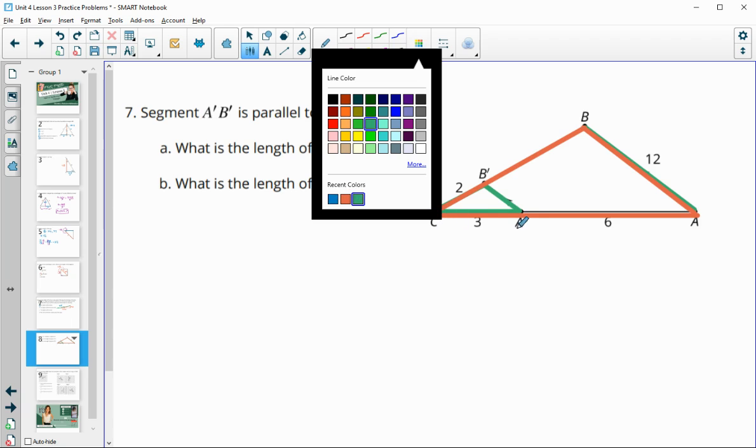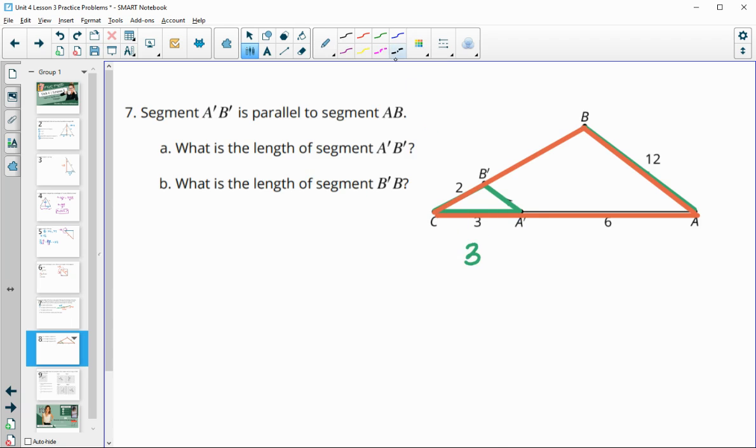So we've got, if we think of AC as the original segment, and A'C as the new. So we would do the new divided by the original. So 3, the green segment, divided by the original orange segment, which was 9. So we can see then that our scale factor is 1 third.